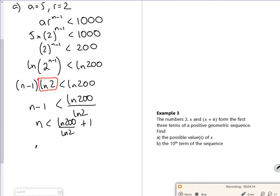Now this is where you have to be a little bit careful. Because I have to double check, is ln 2 positive or negative when I divide by it? Because if I'm dividing by a negative, it flips the inequality. This one doesn't, so I'm okay. So n must be less than log 200 over log 2 plus 1. Now that gives me n is less than 8.64. So therefore n must be 8.